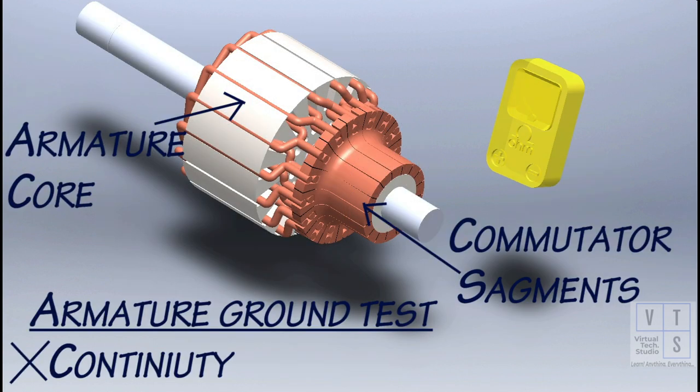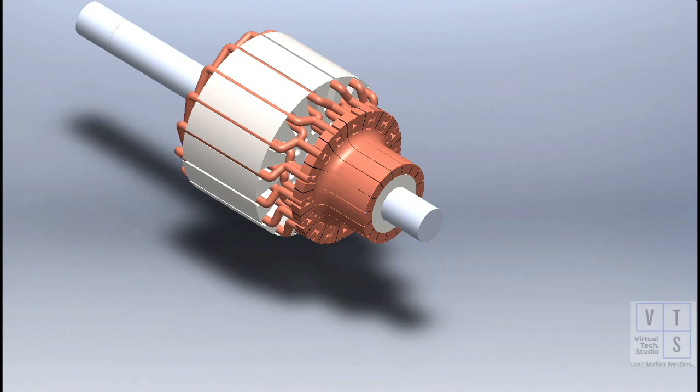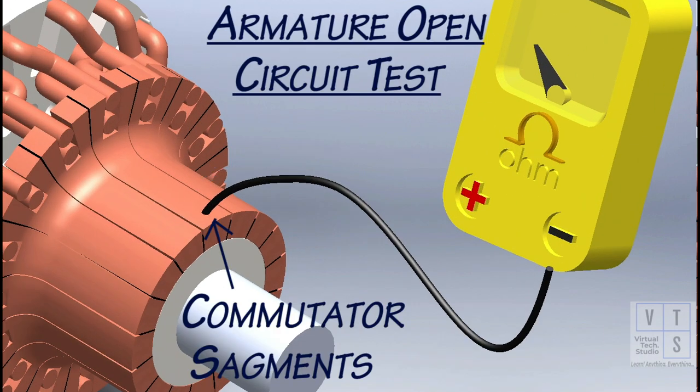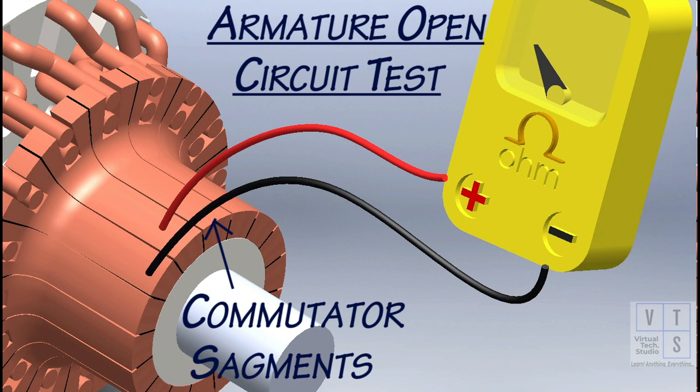Next we will perform armature ground test. Between commutator segments and armature core should be insulated and no continuity should exist. Check for continuity between the consecutive commutator segments. If there is no continuity at any test point, there is an open circuit and whole armature is to be replaced.